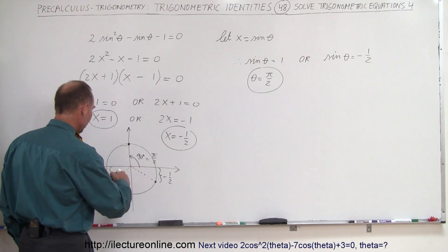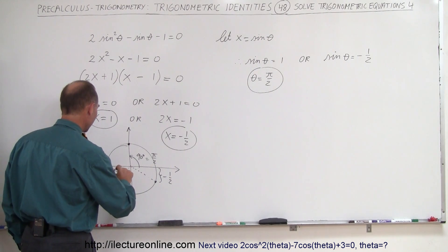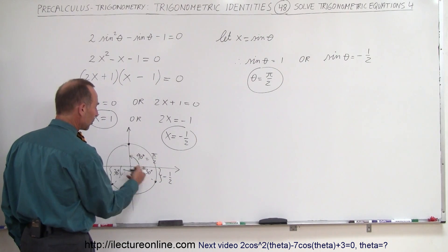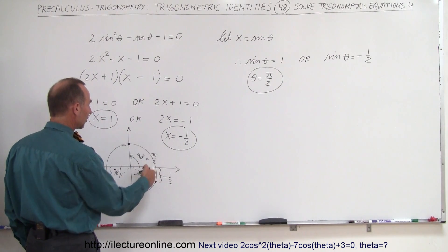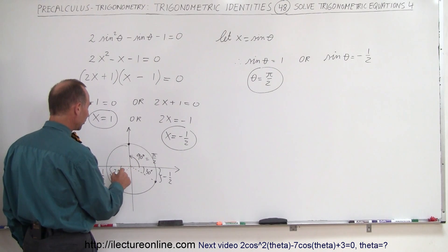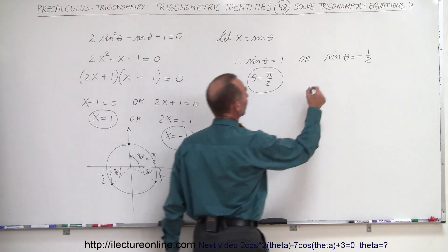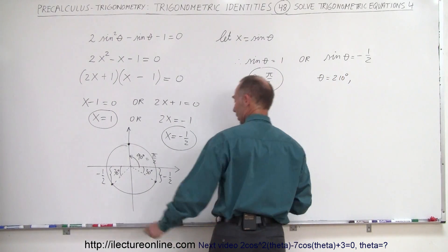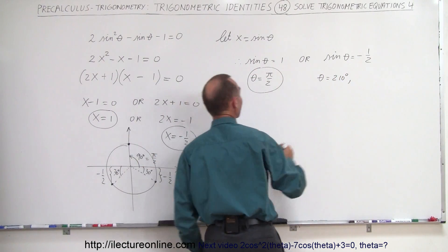That means that this angle right here must be a 30 degree angle. And this angle here must be a 30 degree angle. Well, of course, now we're looking at angles between 0 and 360 degrees. That would be 180 plus 30, which is 210 degrees.